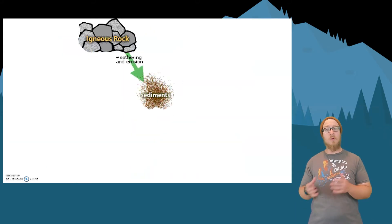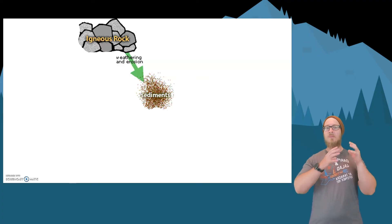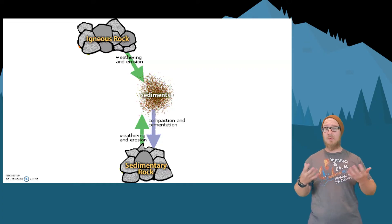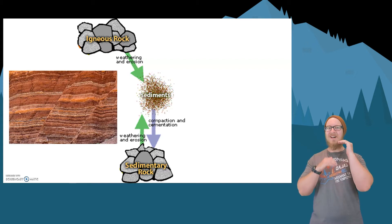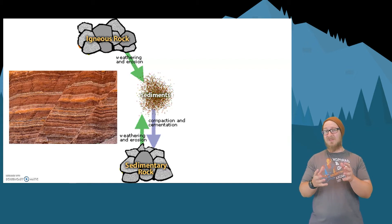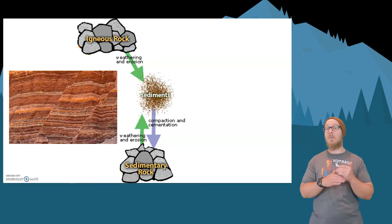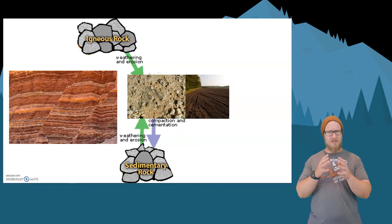Igneous rocks, when exposed to air and water, can be weathered and eroded into small sediments. As layers of sediments build up, the pressure caused by the weight of the material above them compacts them into sedimentary rocks. Sedimentary rocks have these neat stratified layers that is probably their most notable feature. Sedimentary rocks can also be weathered back into sediments.